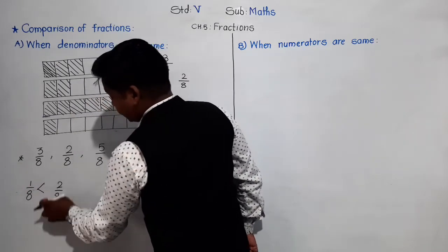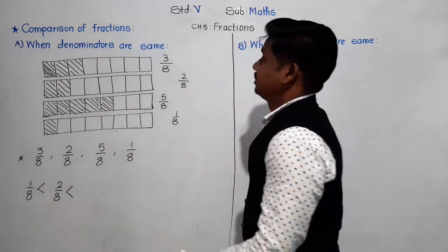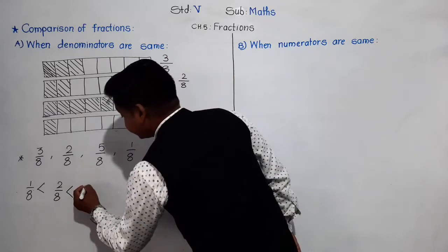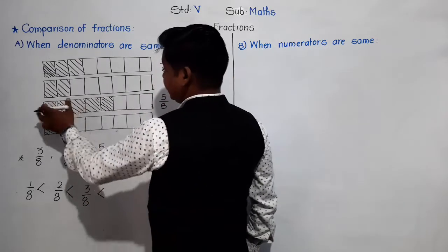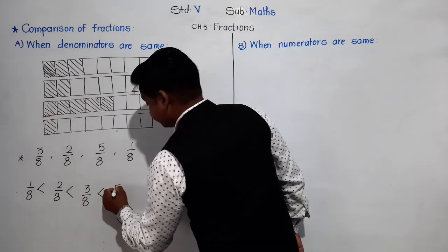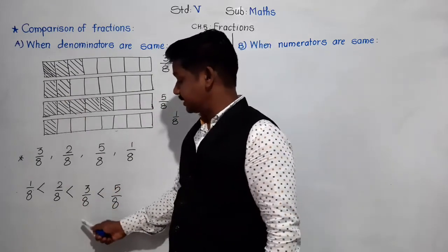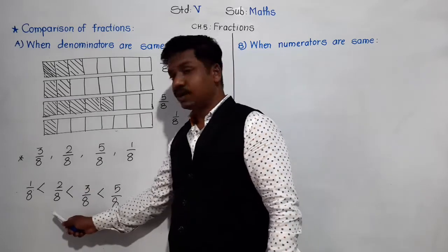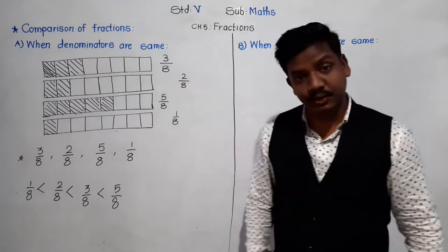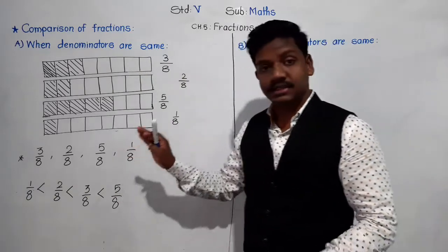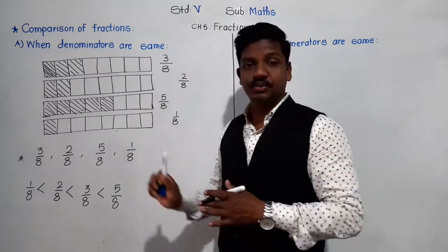So: 1/8 is less than 2/8, 2/8 is less than 3/8, and 3/8 is less than 5/8. That means 5/8 is greater than 3/8, 3/8 is greater than 2/8, and 2/8 is greater than 1/8. This is the comparison of fractions having the same denominator.